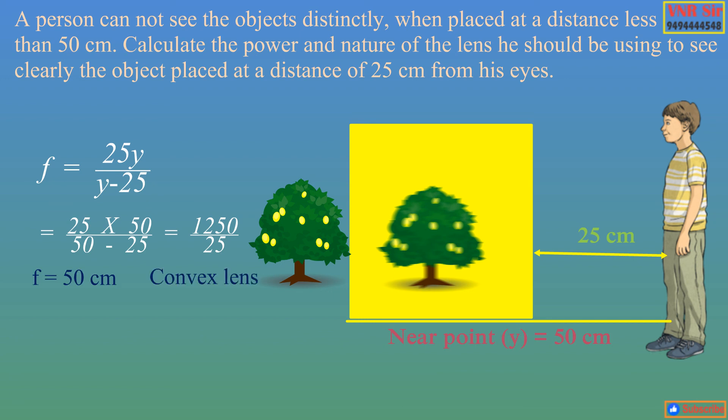So how to calculate power? We know the relation between power and focal length: power is equal to 100/f as f is in cm. So then power equals 100/50, that is 2 diopters. Therefore, the power of the lens is 2 diopters and the nature of the lens is convex.